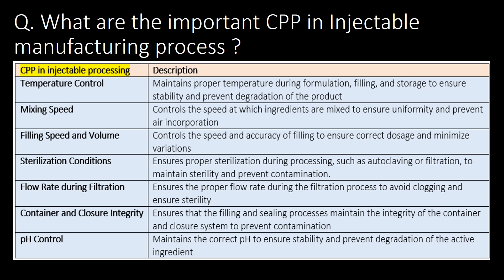What are the important CPPs in the injectable manufacturing process? The important CPPs in injectable manufacturing are: temperature control, mixing speed, filling speed and volume, sterilization conditions, flow rate during filtration, container closure integrity, and pH control.